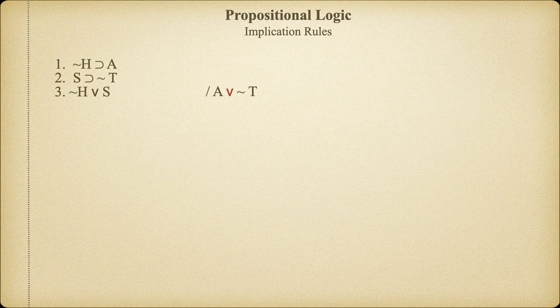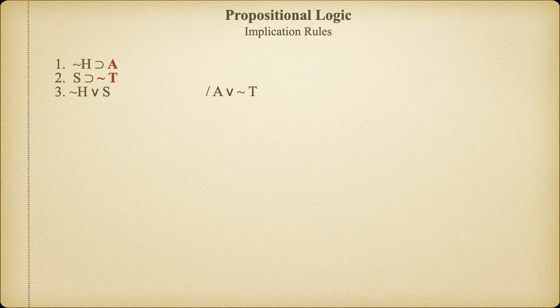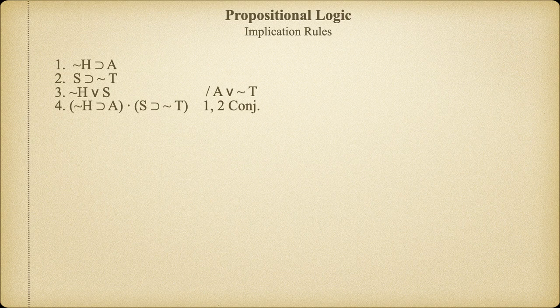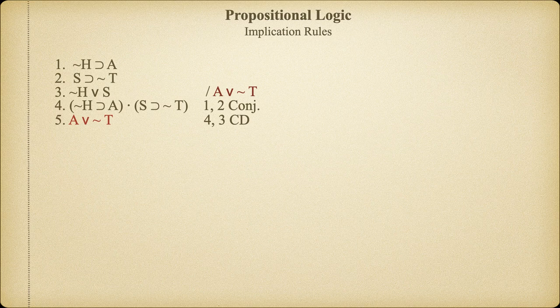We only have two rules that would allow us to conclude a disjunction, addition or constructive dilemma. In order to use addition, we would need A on a line by itself, which we don't have. Nor is it clear how we could get it on a line by itself. But notice that A and not T are both in the consequent position of material implications in premise one and two. So if we could get them conjoined on a line together, we could perform a constructive dilemma using the third premise. So on line four, we can use the conjunction rule to connect premises one and two together. Now we can put lines four and three together to derive A or not T, which is the conclusion we were attempting to derive. In this case, we only needed to apply two rules to reach the conclusion. Other arguments will require more steps.